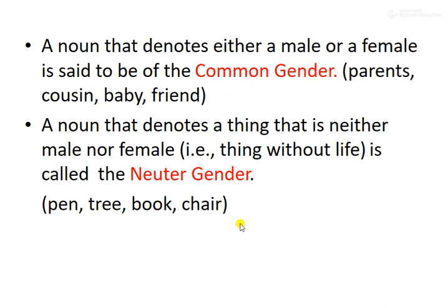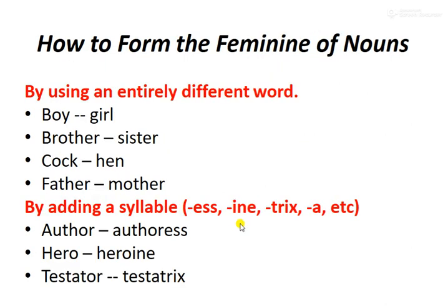Next, we will see how to form the feminine of a noun. One way is to use a totally different word. For example: boy becomes girl, brother becomes sister, cock becomes hen, father becomes mother. These are entirely different words used for the feminine form.